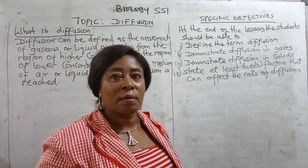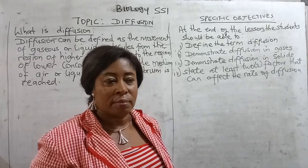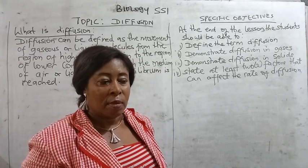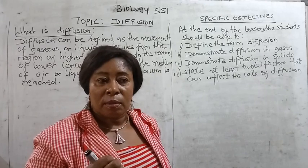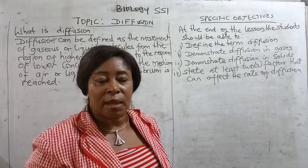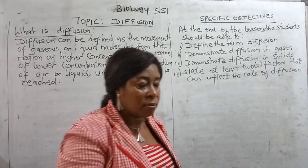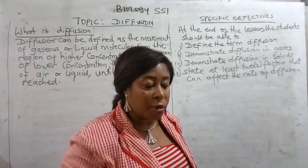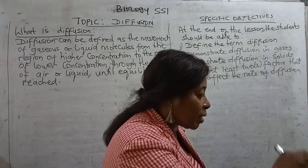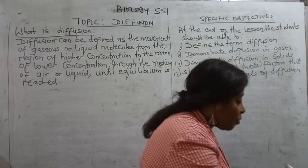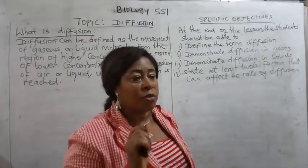For instance, if a rat dies at one corner of your room, a scent will be coming out. How do you trace where that rat died? Obviously you will follow the scent because the scent fills the room. You follow it until you get to where the smell is stronger and eventually you will see the rat. That's exactly what diffusion is all about.